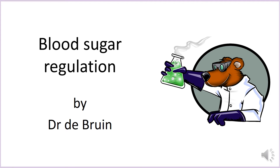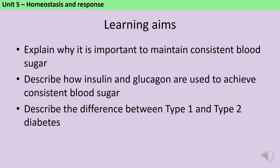This is a video about how blood sugar levels are controlled as part of the homeostasis topic, which comes up in paper 2 of AQA GCSE Biology or Combined Science. By the end of this video you should be able to explain why it's important to maintain consistent blood sugar, describe how insulin and glucagon are used to achieve consistent blood sugar, and describe the difference between type 1 and type 2 diabetes.